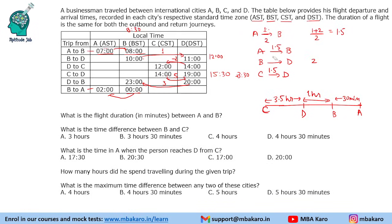To summarize: the journey from A to B is 1 and a half hours, B to D is 2 hours, and C to D is 1 and a half hours. The time difference between A and B is 30 minutes (0.5 hours), between B and D it is 1 hour, and between C and D it is 3 and a half hours.